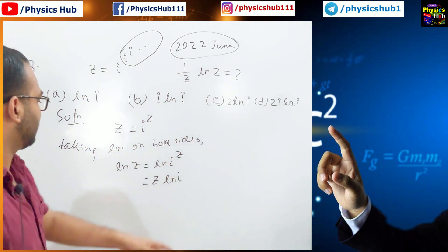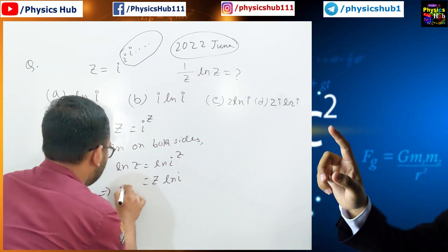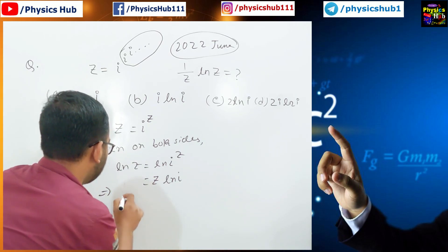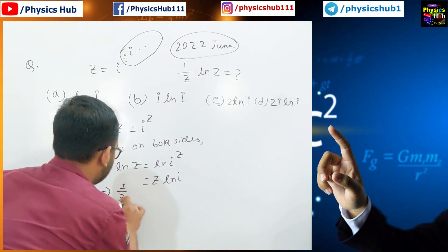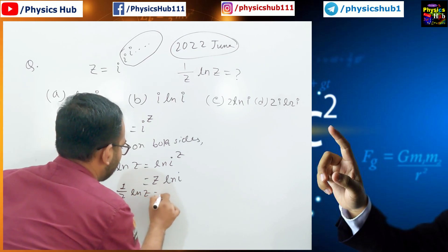What we have to find out is 1 by z log z. So this z is coming to the left. So 1 by z ln z becomes ln i.